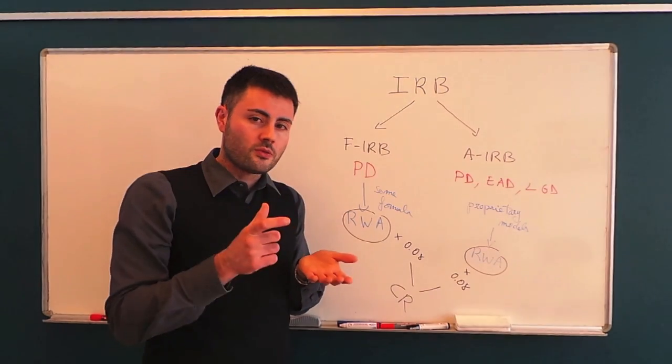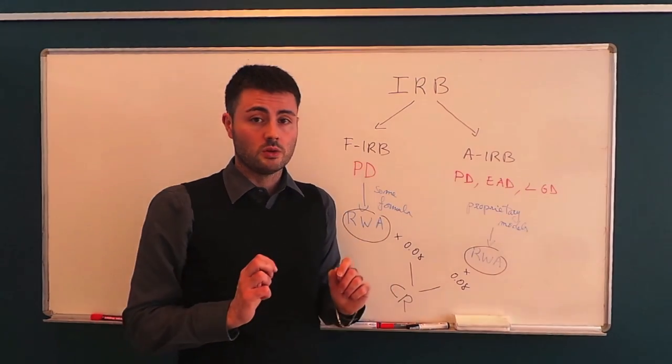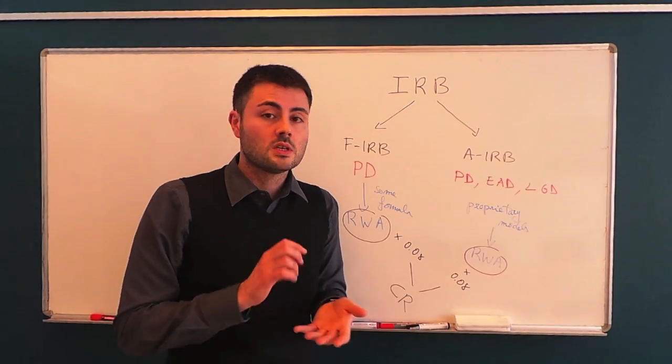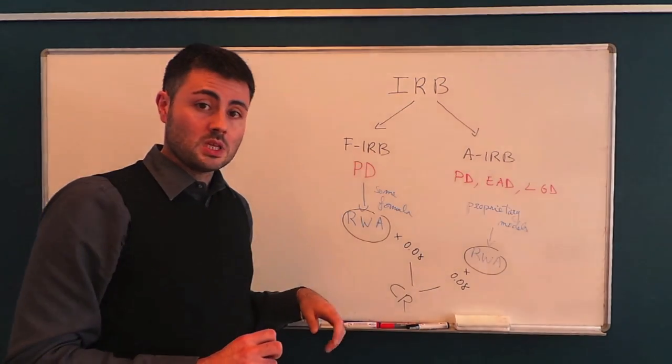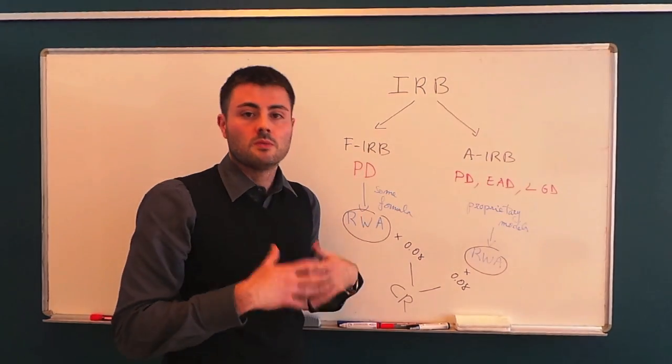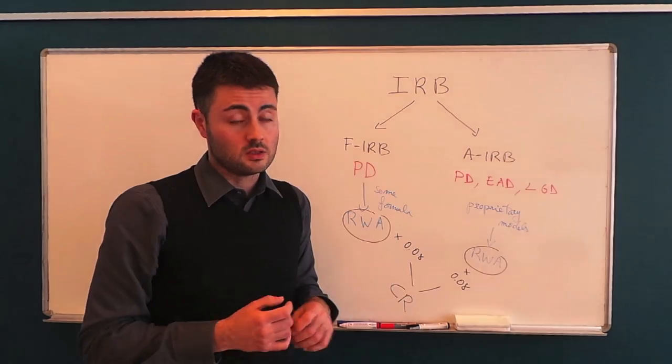So you see the difference between the standardized approach, in which everything is provided by the regulator, and banks simply have to make, if you want, silly computations. In the foundation internal rating based approach, banks compute the probability of default, which is much more sophisticated than, for example, the computation we can have under the standardized approach.